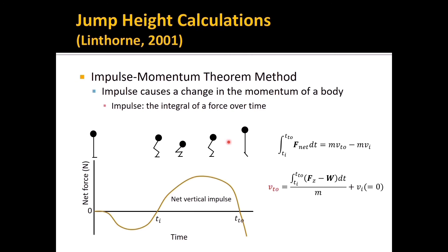The second method is the impulse-momentum theorem method. This theorem states that impulse causes a change in the momentum of the body, and impulse is calculated by the integral of force over time. The area under the force-time curve is the net vertical impulse. Net force equals vertical ground reaction force minus body weight. The whole equation is solved for VTO (velocity at takeoff), and then jump height is calculated.